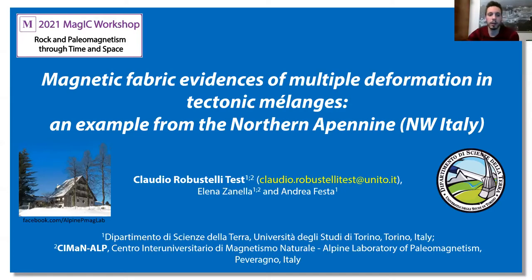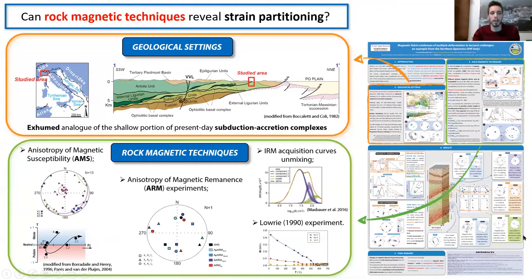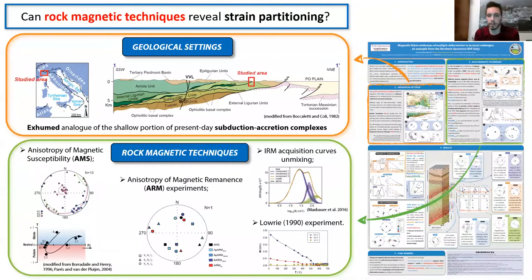I'm going to present some interesting magnetic fabric evidences of multiple deformation in tectonic melanges. The question is: can rock magnetic techniques reveal strain partitioning and maybe provide significant information to better understand the geodynamic evolution of subduction accretion complexes?